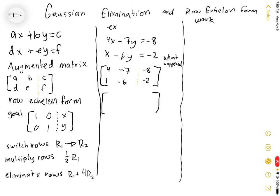That's going to be r1, and it switches with r2. And that'll give us 1, negative 6, negative 2, 4, negative 7, negative 8.